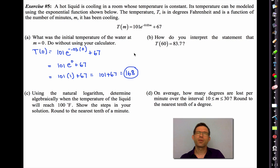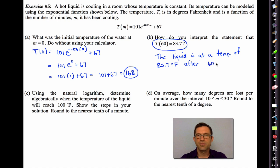Now take a look at B. How do you interpret the statement T of 60 equals 83.7? Write something down for that. What is your interpretation? This is important. One of the things that common core algebra expects of us is to be able to interpret statements in function notation. And what this really tells us is the liquid is at a temperature of 83.7 degrees Fahrenheit after 60 minutes of cooling. The output to the function is the temperature. The input is the number of minutes it's been cooling.